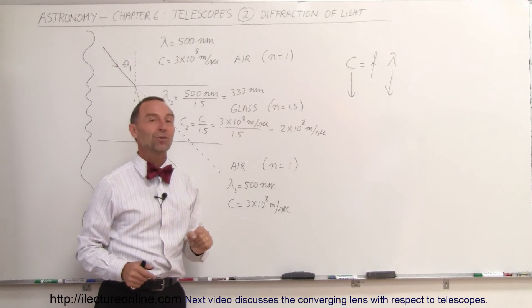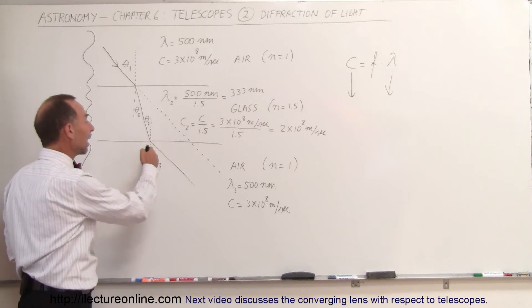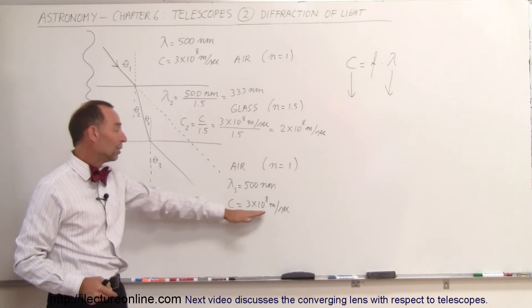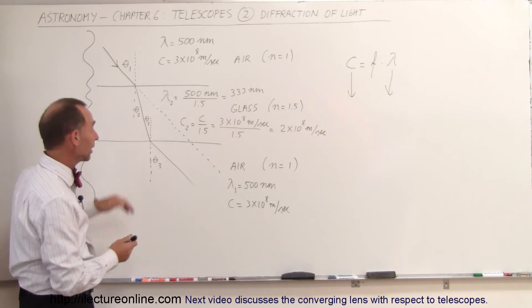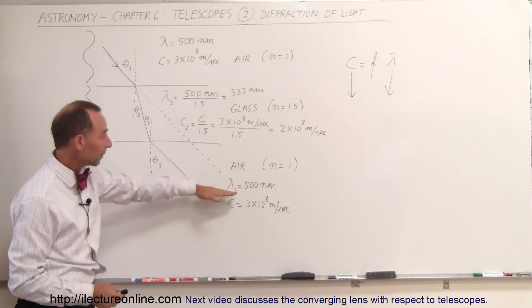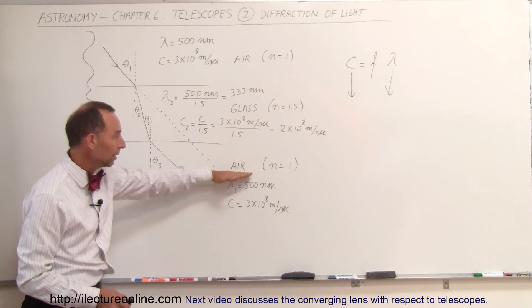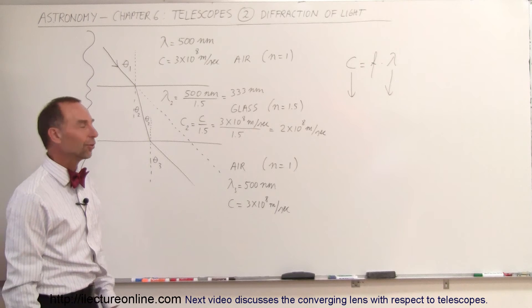And as soon as it leaves the glass, it speeds up again and reaches its normal speed of 3 times 10 to the 8 meters per second. It does that rather quickly, gets right back up to speed. The wavelength goes right back to normal when it enters the air again on the other side.